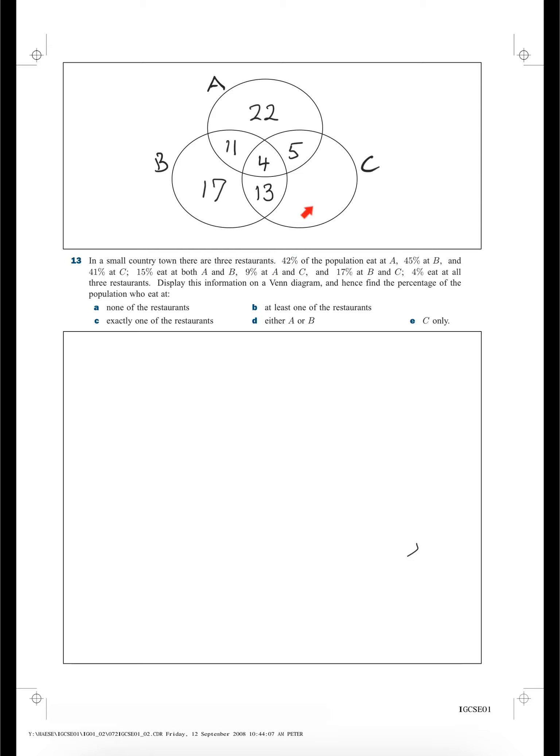And this one, C, it says 41% at C. So this area in here, all that circle is 41. So what is this? That's 9 and 13. That's 22. And it's got to be 41 there. That'd be 19.